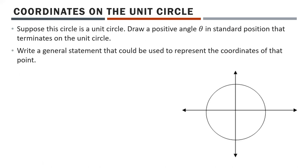So, coordinates on the unit circle. Suppose this circle is a unit circle — remember, a unit circle is a circle centered on the Cartesian plane with a radius of 1. We draw a positive angle theta in standard position that terminates on the unit circle. I'll draw an angle right here — we'll call that angle theta. It can be drawn pretty much anywhere, as long as it's in standard position, coming out of the origin and using the positive x-axis.